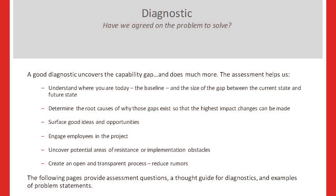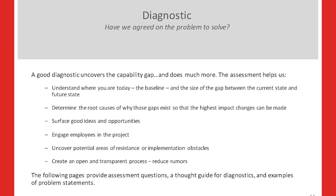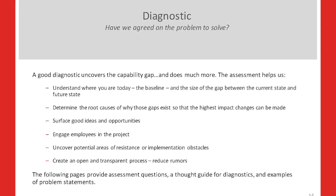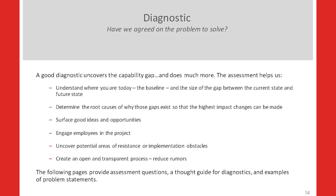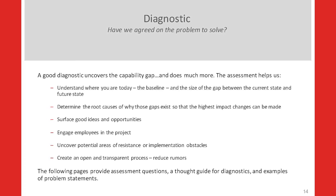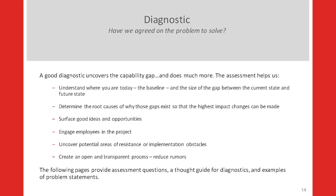Our third question is: have we agreed on the problem to solve? Once we have a strategy and a set of capabilities, we know where we're going. Now we need to know how big is the gap from where we are today to our intended destination. This is the diagnostic, and it's a really important part of the organization design work. We need to be clear on root causes, and we need our client to own the problem to solve.